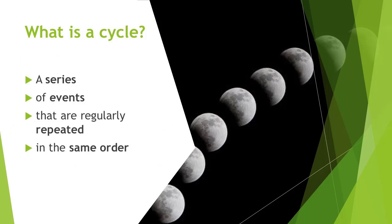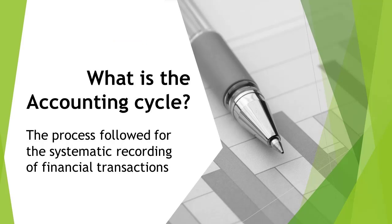A cycle is a series of events that are regularly repeated in the same order. In life, we can find a variety of cycles around us — just think about the sun rising every day, moving from east to west before setting again, and the seasons we experience every year. When we think about financial accounting, the process followed for the recording of transactions also follows a cycle.